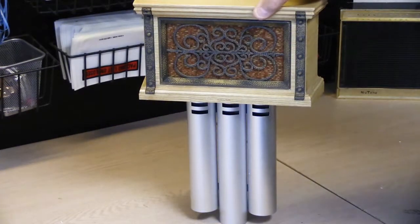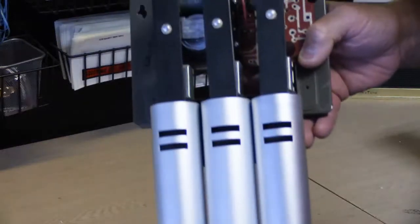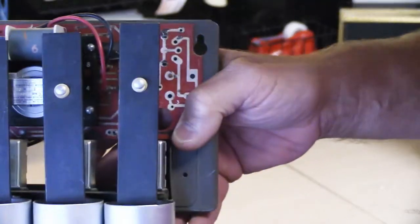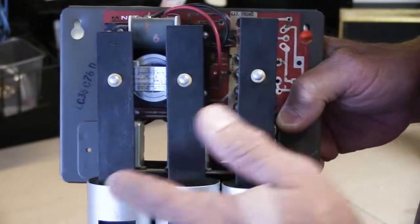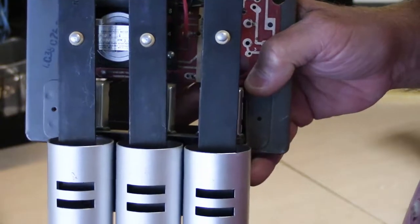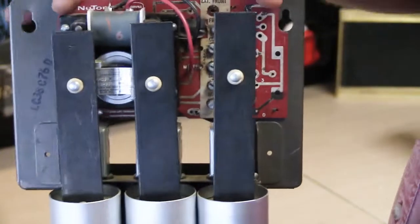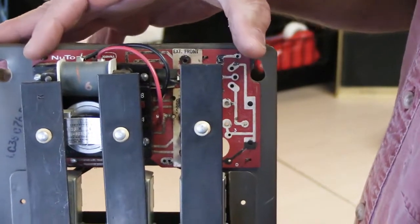So these are nice chimes. And what you have here is hidden behind the three tone bars. You've got a pretty standard Newtone clockwork mechanism base.